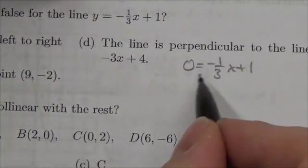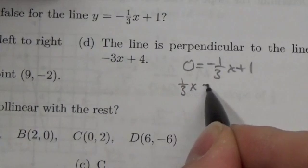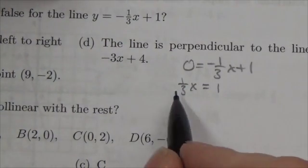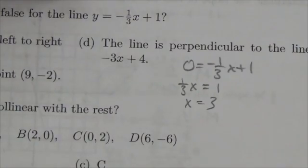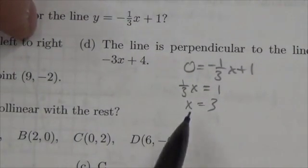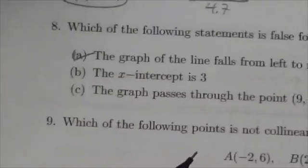I want to get the x by itself, so I'm going to bring it over to this side. One-third x is equal to, and I just left a one over there. Multiply both sides by three, and I will get that x is equal to three. So that's got to be true. The value of the x-coordinate is three when the y-coordinate is zero.